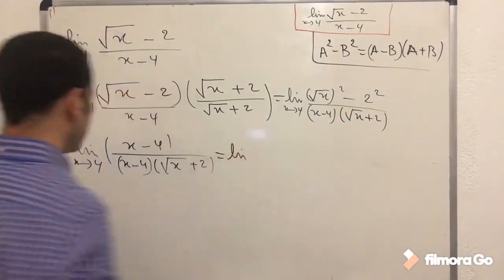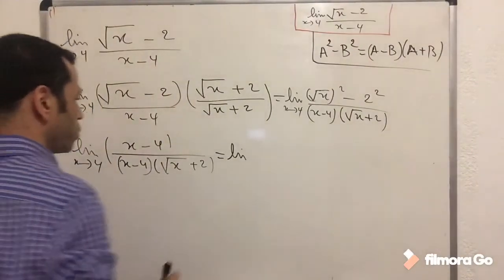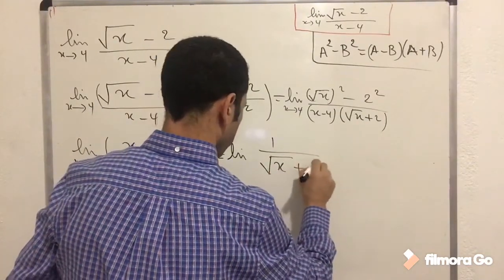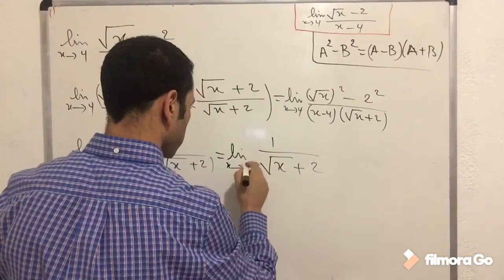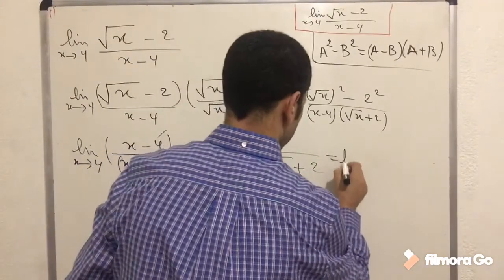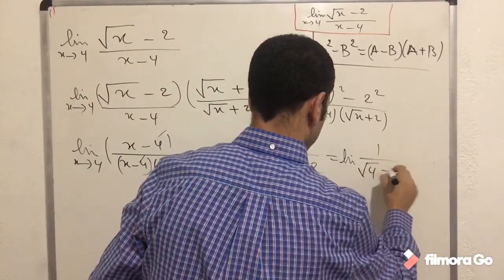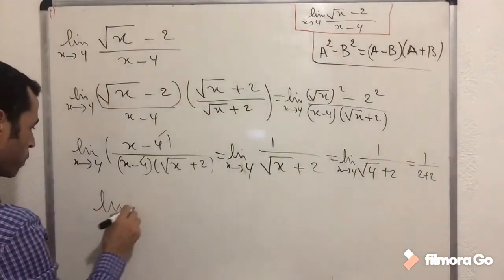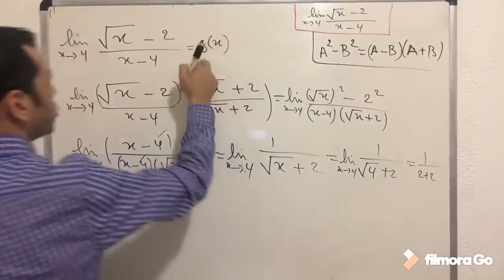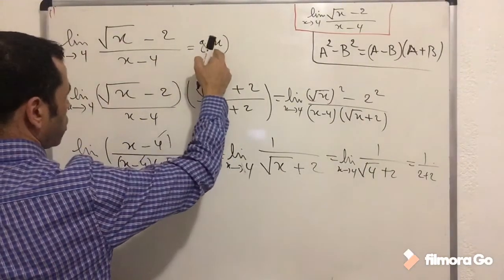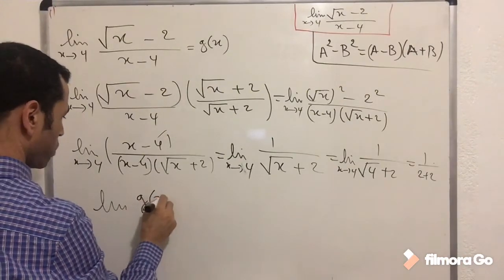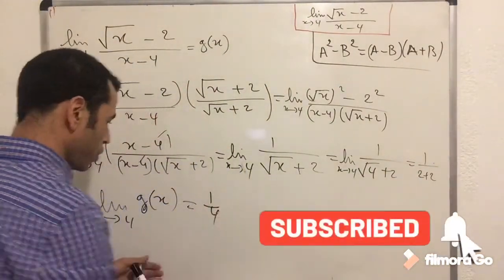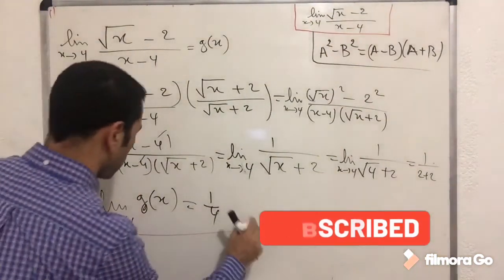After canceling, the limit becomes 1 over (square root of x plus 2) as x approaches 4. Plugging in 4: square root of 4 is 2, so we get 1 over 2 plus 2, which is 1 over 4. The limit of g(x) as x approaches 4 is 1 over 4.